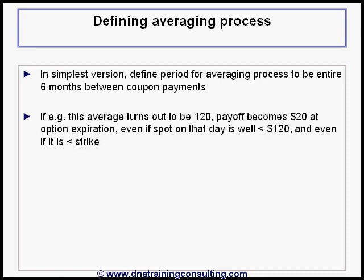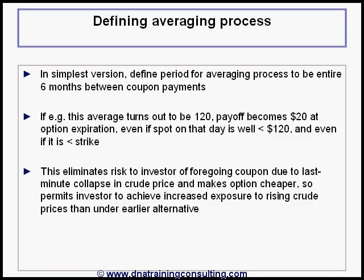For example, if this average turns out to be 120, the payoff becomes $20 at the expiration of the option, even if the spot price on that day is well below 120, and even if it is below the $100 strike. Not only does this eliminate the risk to the investor of foregoing coupon due to a last-minute collapse in the price of crude, it also makes the option cheaper, and so permits the investor to achieve increased exposure to rising crude prices than under our earlier alternative.